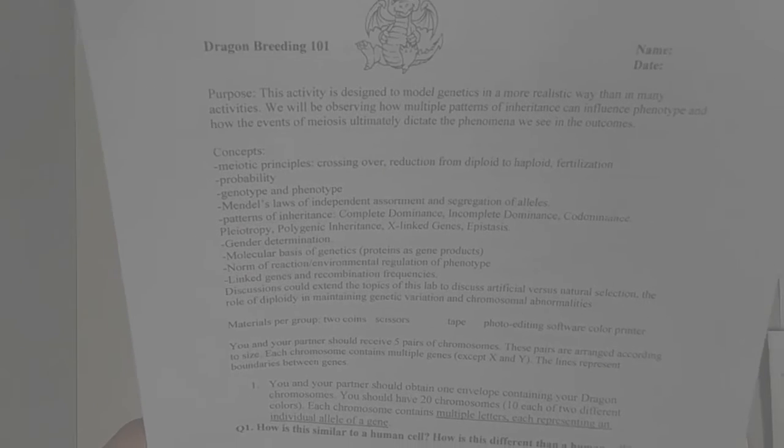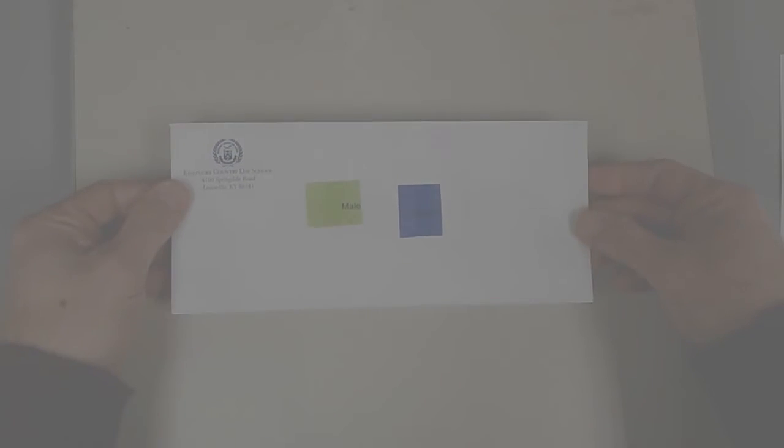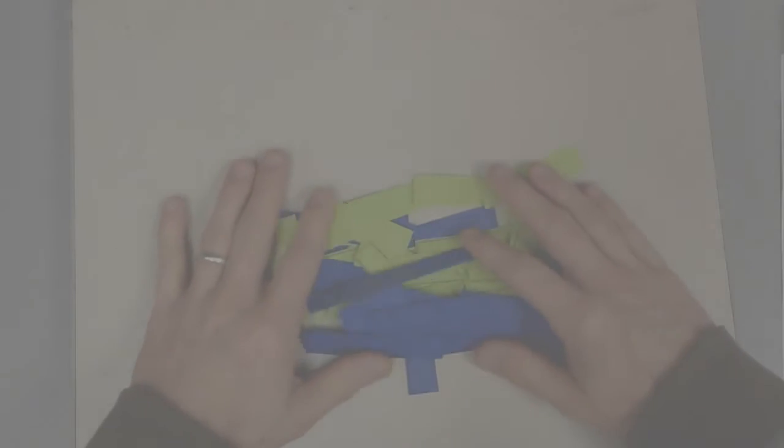So you will get an envelope not unlike this one. As you can see, it should say male and female on it. It may have this in writing or a little color badge on it. When you open this envelope, what you are going to see looks like a mess initially, and it kind of is.